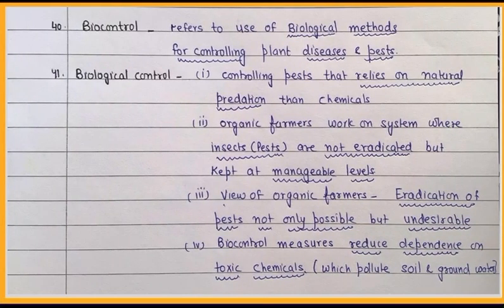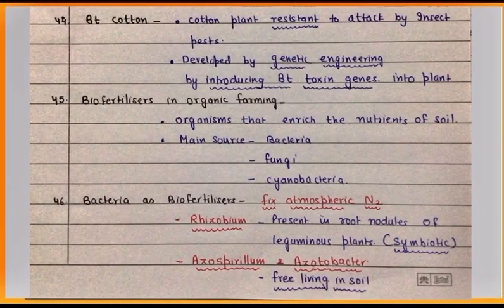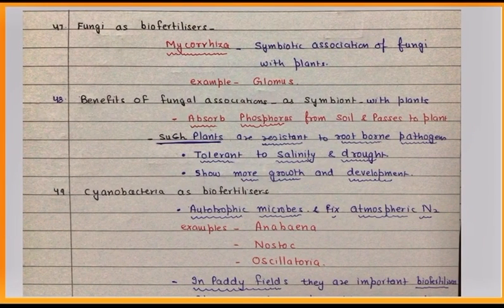Organic farmers use biological control methods to control plant diseases and pests. Here are some examples of biocontrol agents. Biofertilizers are preferred in organic farming instead of chemicals, to protect soil and groundwater from pollution.